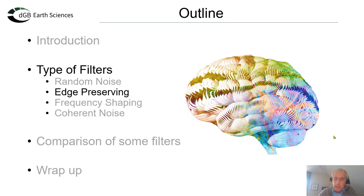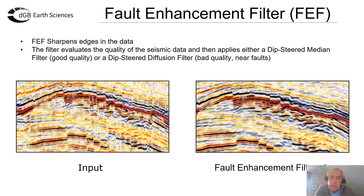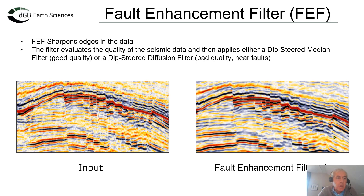Now let's look at edge preserving filters. In OpenDetect, we have different dipsteered filters and we have combined these using our attribute engine as a chain of attributes into what we call a fault enhancement filter. A fault enhancement filter is a composite of a dipsteered diffusion filter and a dipsteered median filter. The dipsteered diffusion filter evaluates in a small radius around the evaluation point what is the best quality seismic, using the similarity attribute, and then moves the best quality seismic into the direction of the evaluation position. The dipsteered median filter outputs the median value.